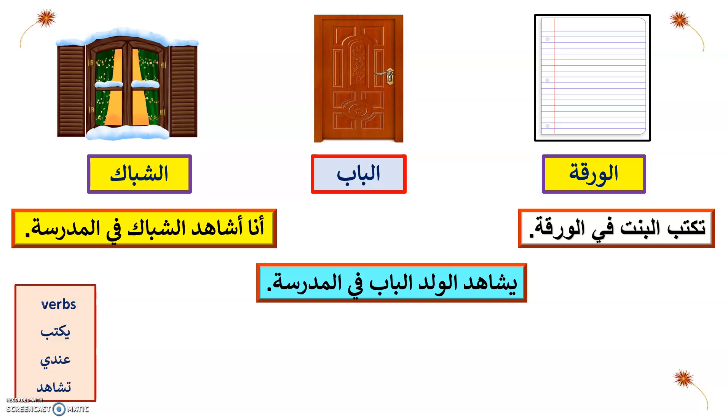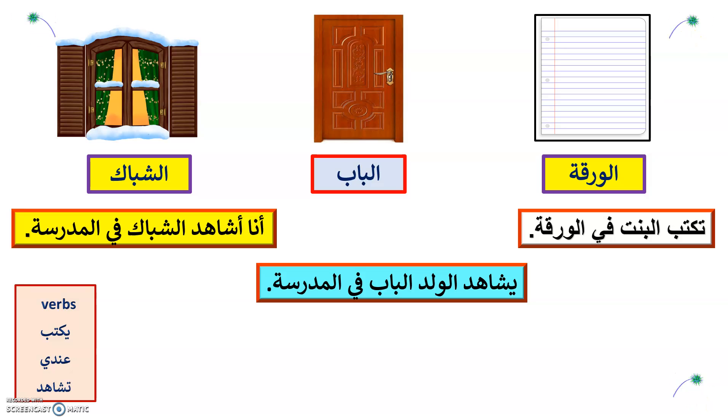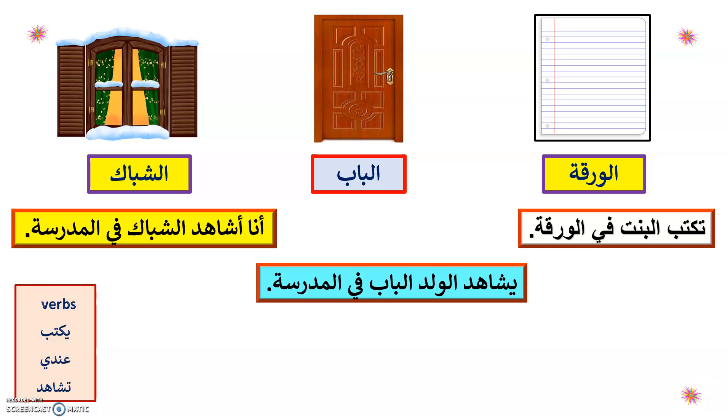Also 'andi' means 'I have.' For example: Ana andi bab wa shubak fi albayt — I have a door and a window at home.